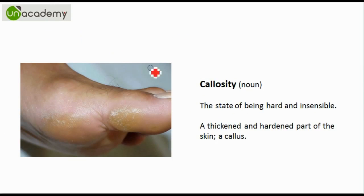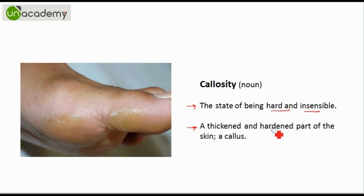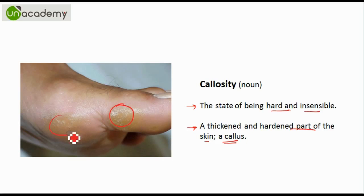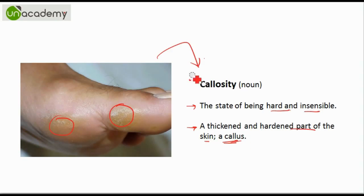Next we have Callosity. Callosity means the state of being hard or insensible, or a thickened hardened part of the skin called a callus. You can see that these parts of the skin are called callous, and this image can help you remember Callosity.